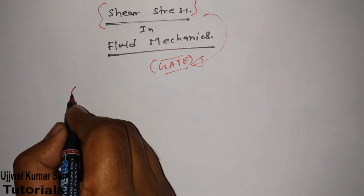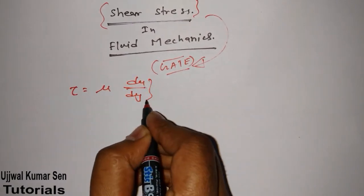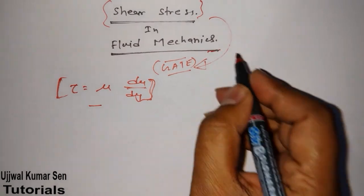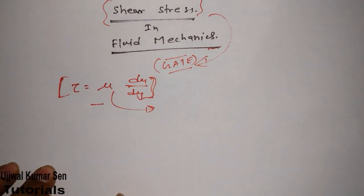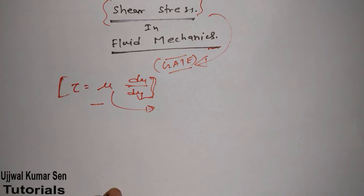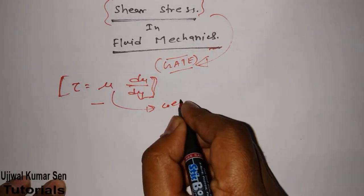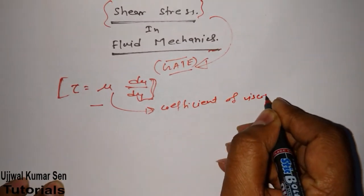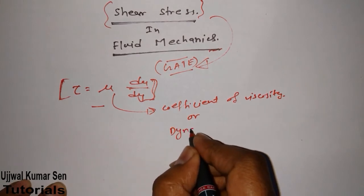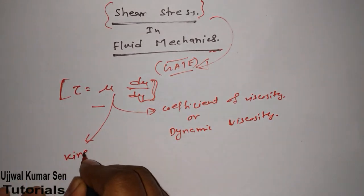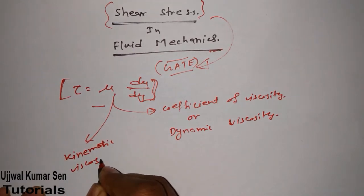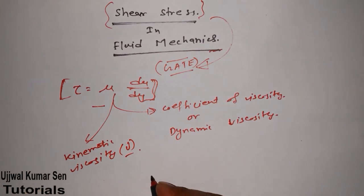As you know, tau equals mu times du/dy. Even those who have studied fluid mechanics just a little know about this equation, but knowing it alone is not enough to solve numerical problems. In the case of solids we have friction, but in the case of fluid we have the coefficient of viscosity, also known as dynamic viscosity, which is denoted by mu.